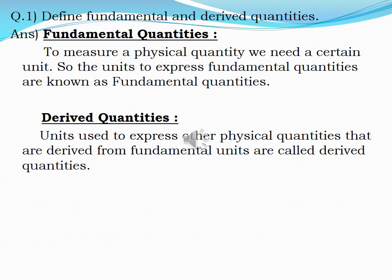You know what is a physical quantity. The definition is that a quantity that can be measured is called a physical quantity. For example, length, mass, time, temperature, etc. These quantities can be measured by different measuring instruments. For example, you measure mass by balance, temperature with a thermometer. Physical quantities are divided into two groups.